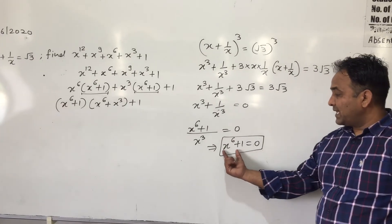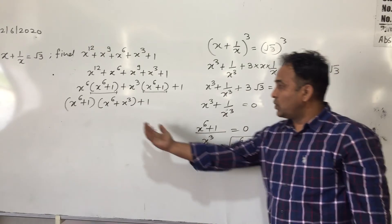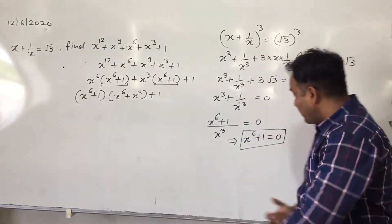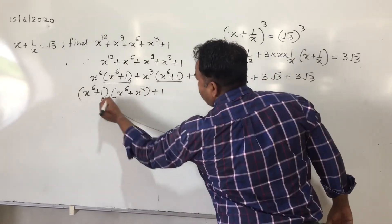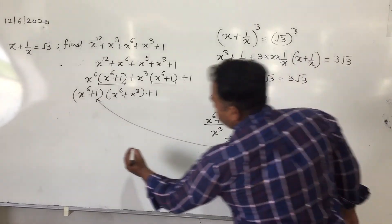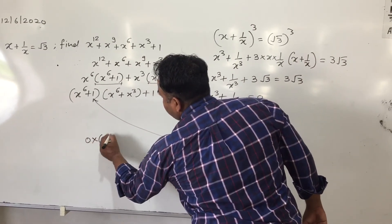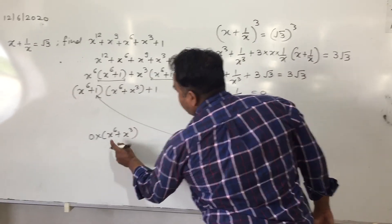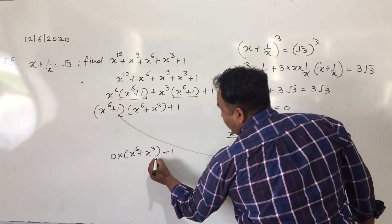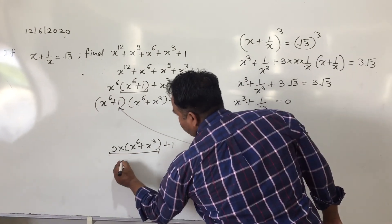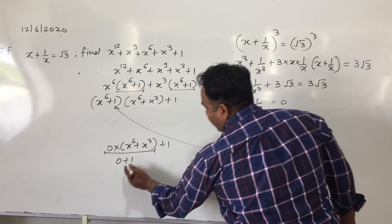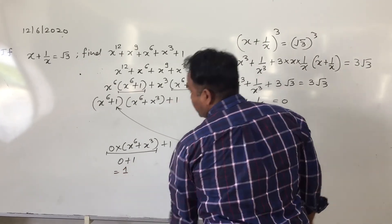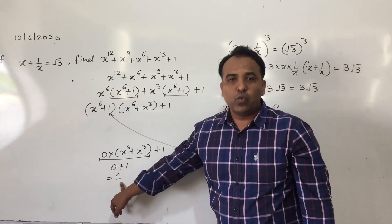Now, we know that x^6 + 1 is one of the factors of this expression. Putting this x^6 + 1 here, we will get 0 × (x^6 + x^3 + 1). Now, 0 multiplied with something is 0 plus 1 remains added, and the answer of this expression is plus 1.